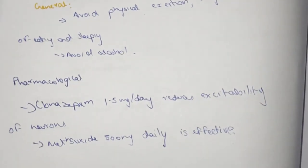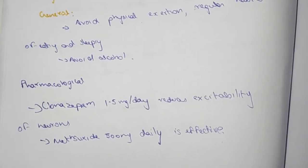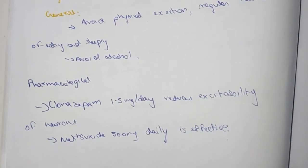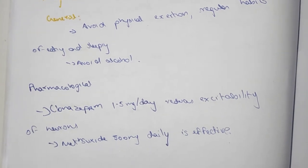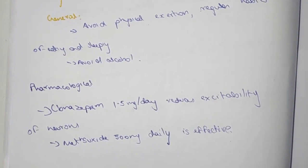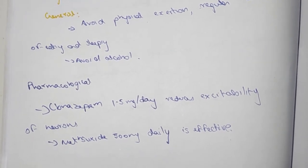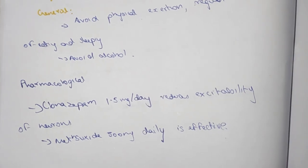Pharmacology: Clonazepam 1.5 mg per day reduces excitability of neurons. Methsuximide 500 mg daily is effective.